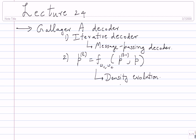To do density evolution properly, we needed a few assumptions to hold. One was the all-zero codeword assumption. How was this justified? Because of the symmetry of the channel — the proof essentially depends on the symmetry of the channel. That was one assumption needed. The other thing we needed was the IID assumption, which comes from the cycle-free neighborhood assumption — the tree-like neighborhood assumption.